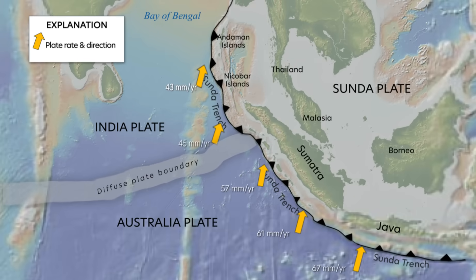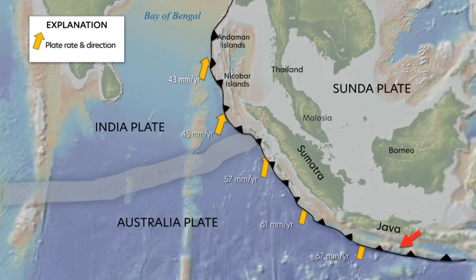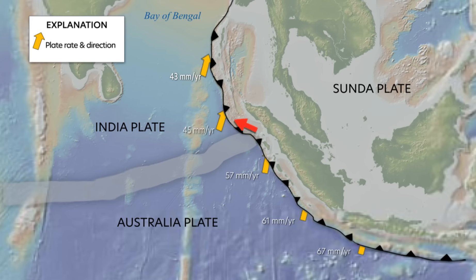At the Sunda Trench, the Australia and India plates subduct beneath the Sunda Plate. At the southern part of the Sunda Trench, Australia plate motion is perpendicular to the trench, but to the northwest becomes oblique to the trench. Farther north, India plate motion is highly oblique to the trench.